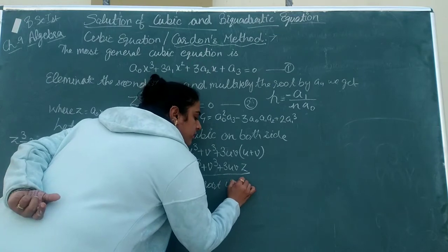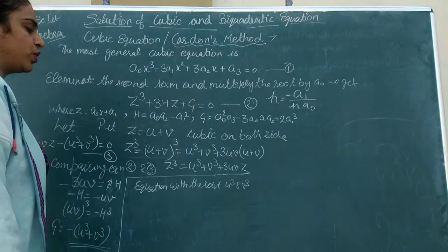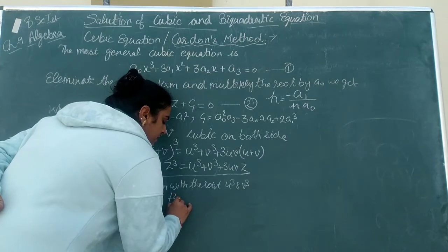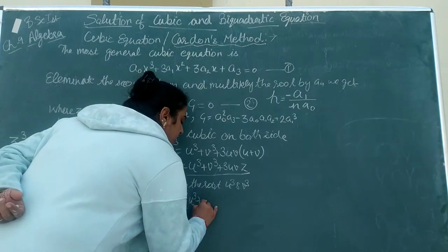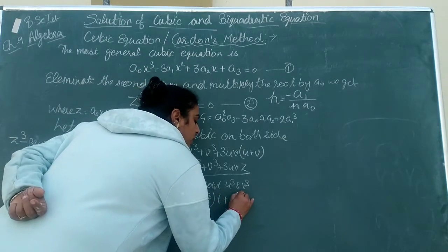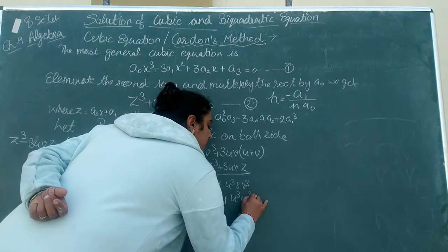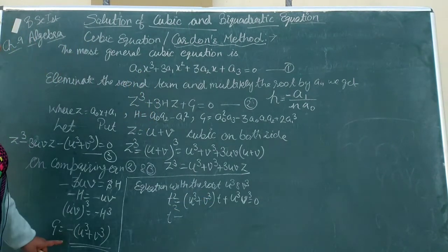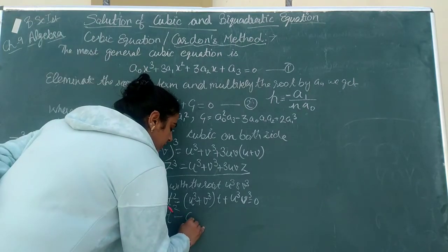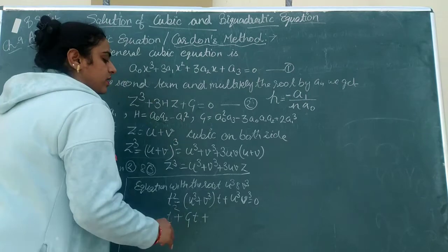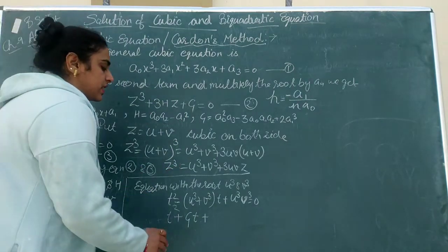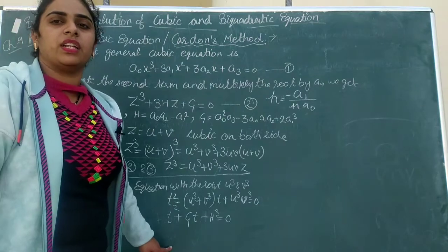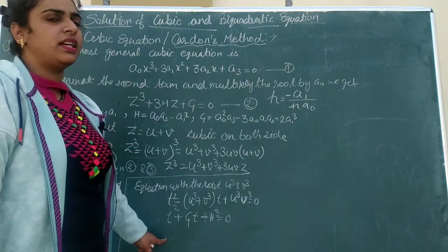We form an equation in T whose roots are U³ and V³: T² − (U³ + V³)T + U³·V³ = 0. Substituting values: T² − (−G)T + (−H³) = 0, which gives T² + GT − H³ = 0. This is a quadratic equation in T.